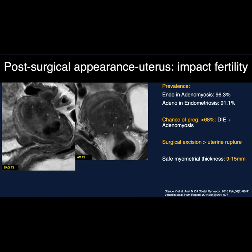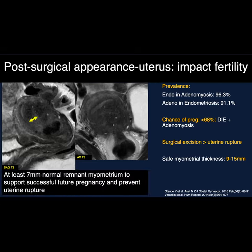However, depending on how aggressive the surgery is — particularly pertaining to the uterus and adenomyosis — there can be an increased chance of uterine rupture. A 2016 paper describes a safe myometrial thickness to be left behind in the range of 9 to 15 millimeters. They say that if about 7 millimeters of normal remnant myometrium from the endometrium to the serosa is left behind, that increases the success of future pregnancies and prevents uterine rupture in this patient population.